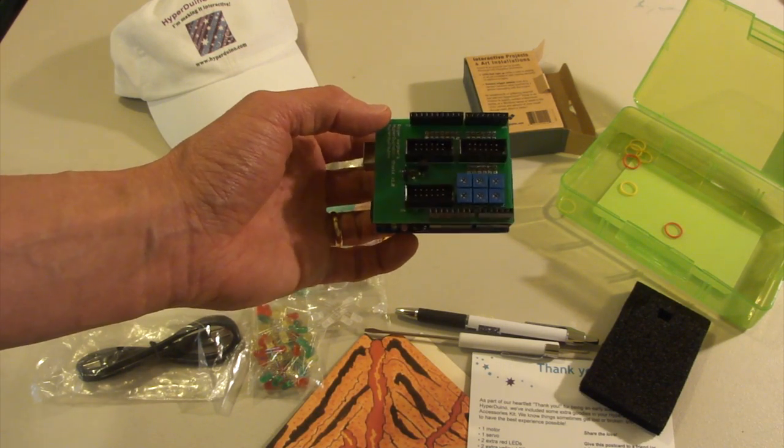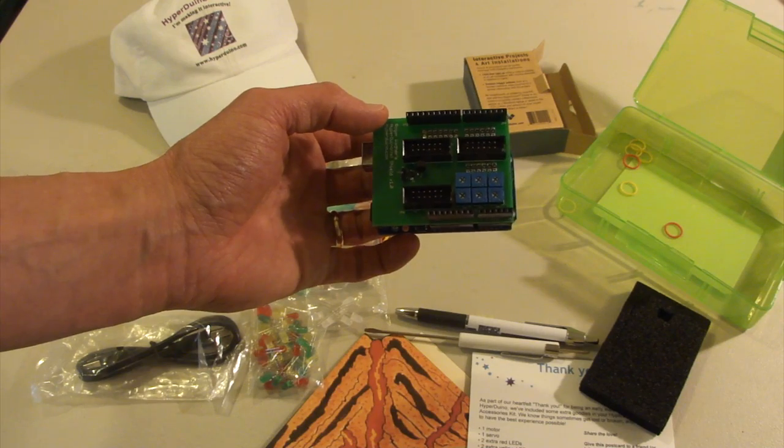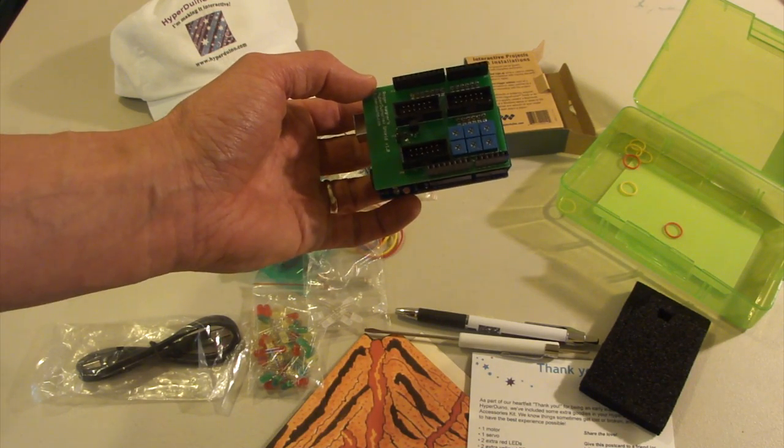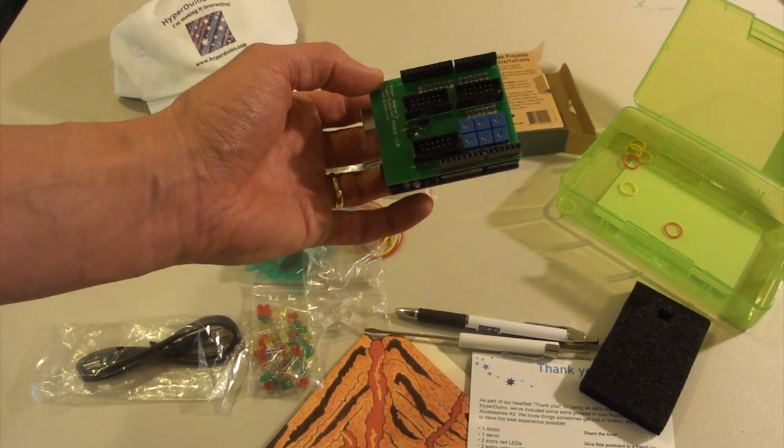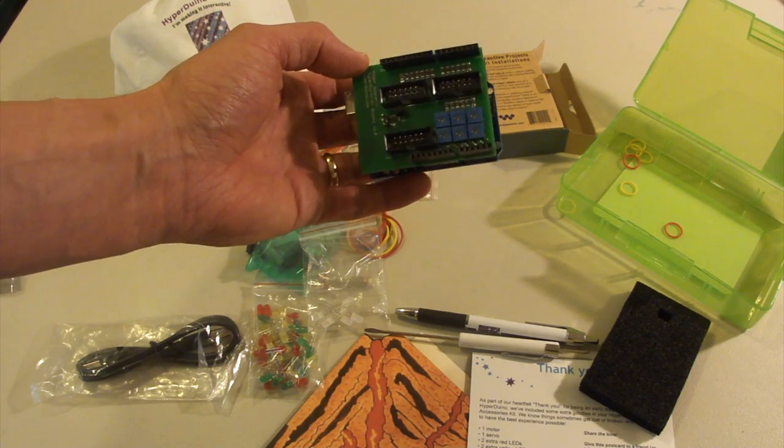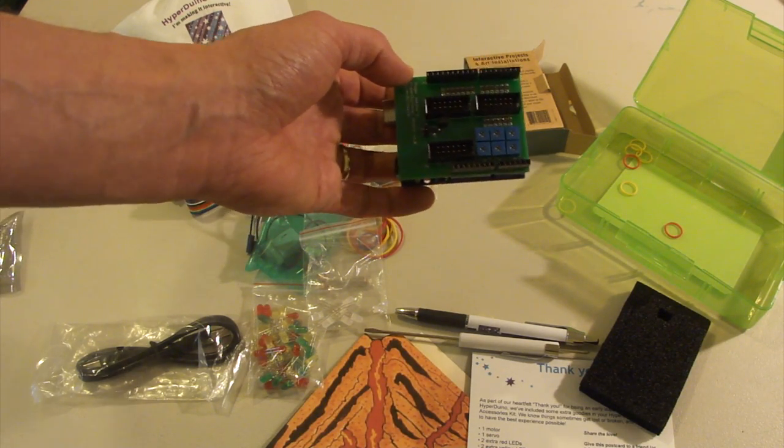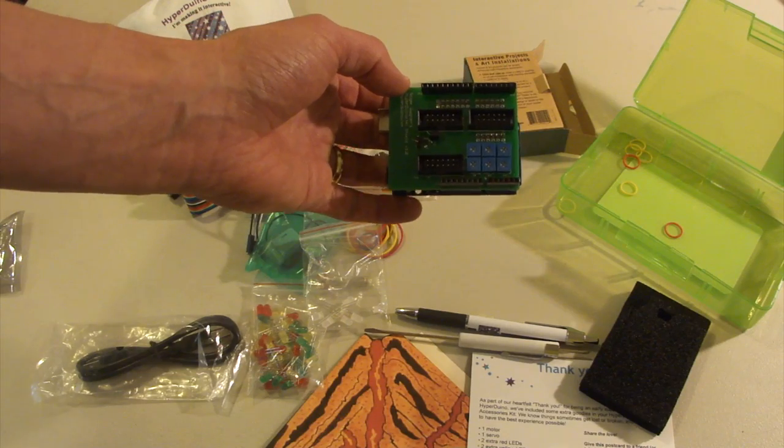And it looks like it also has some input pins there. So you can hook up your photo cells to do like, basically when a user puts their hand over something, you could have it hook up to the computer and do something.